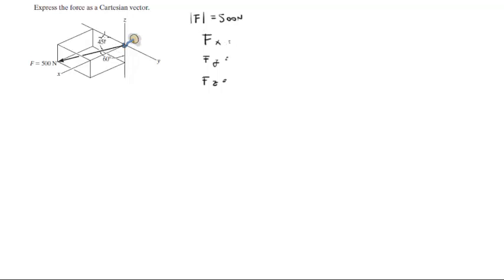We got the angle that it forms with the negative Y is 45 degrees. So magnitude of F times the cosine of 45. But it's negative because it's the angle that it forms with the negative Y, not with the positive Y.